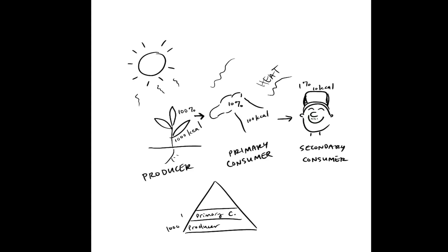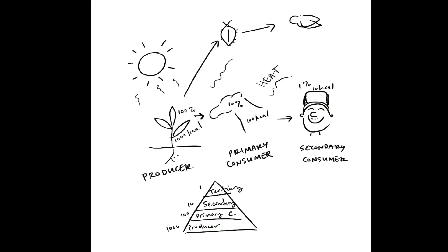To finish the food pyramid, I'm going to add a few more organisms to our food chain to now call it a food web. There's an insect that also eats the plant — it is also a primary consumer and only receives 10% of the energy. Then that bug is eaten by a bird.